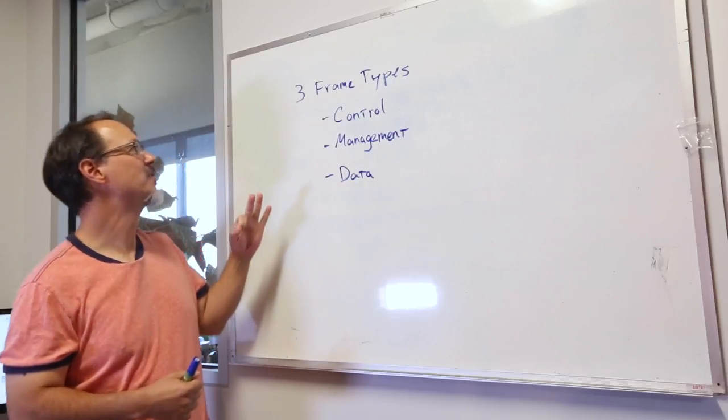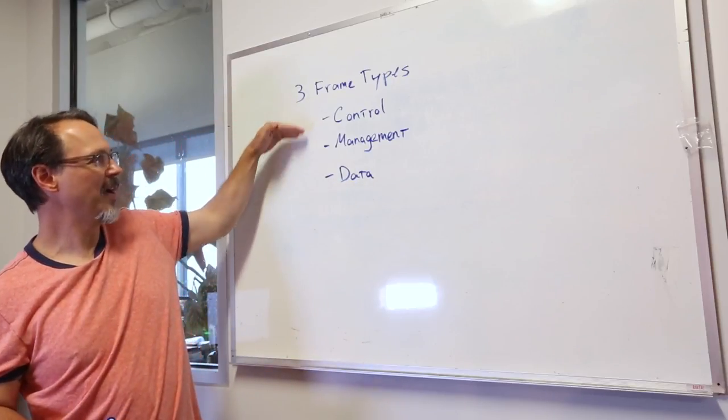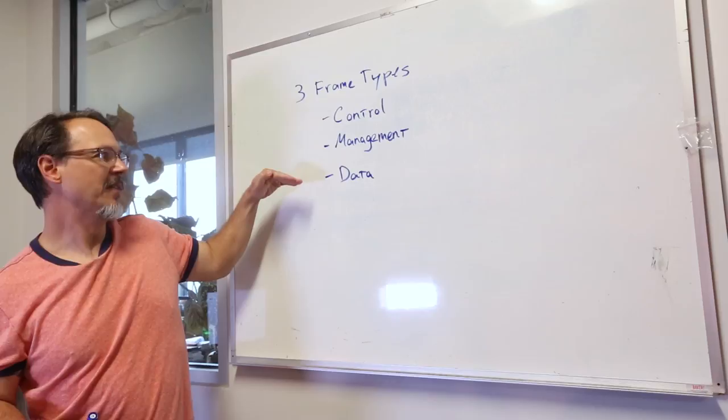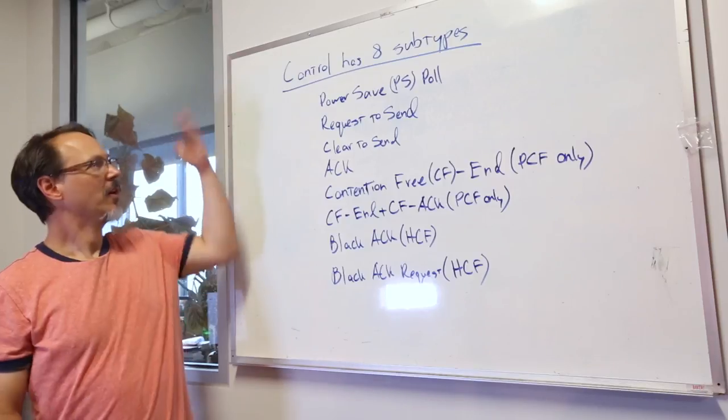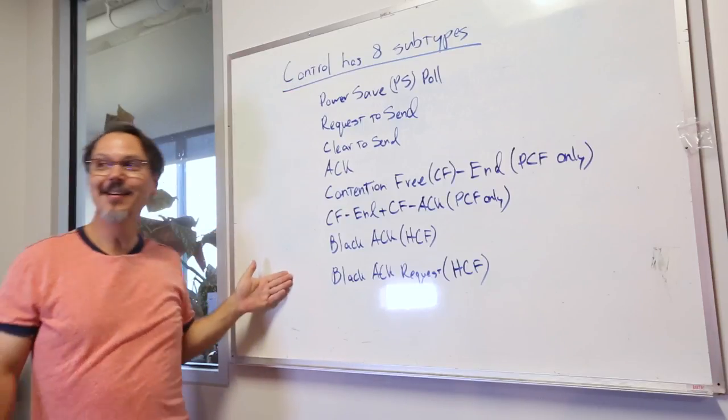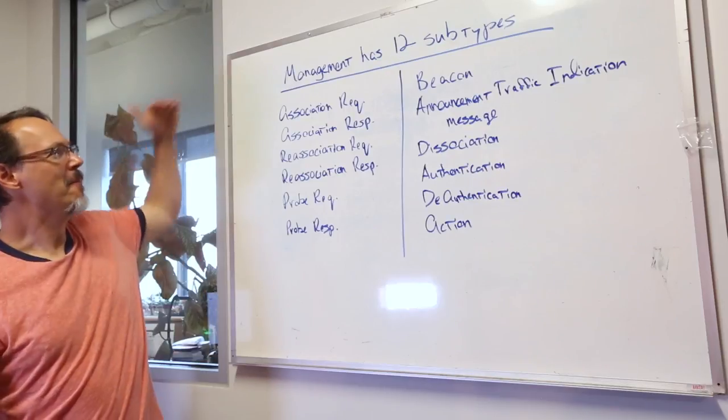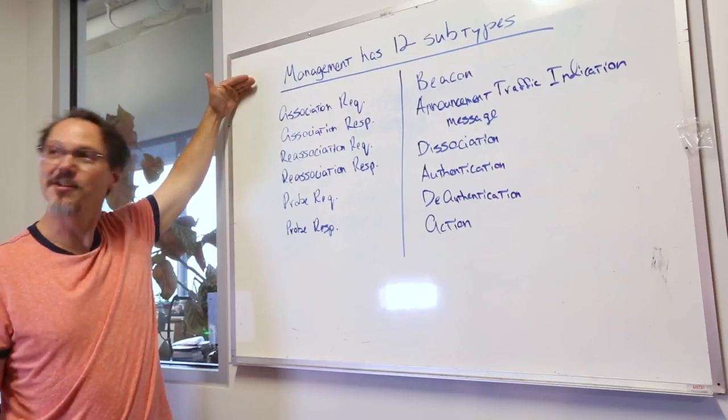There are three main frame types. There's a control frame, there's a management frame, and there is a data frame. Control has eight subtypes. Management has 12 subtypes.